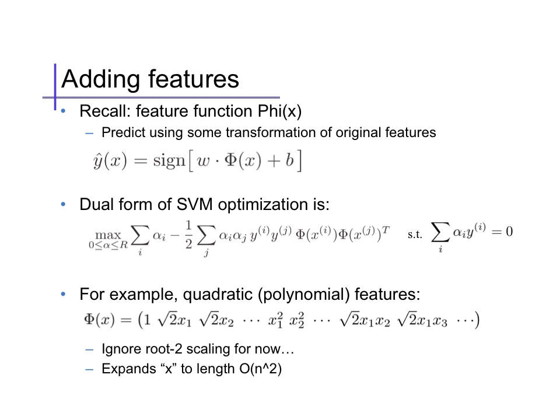As an illustrative example, let's consider the polynomial features given here. So, 1, x1, x2, x1 squared, x2 squared, cross products, and so on. We'll see the purpose of these scaling root 2 terms shortly.